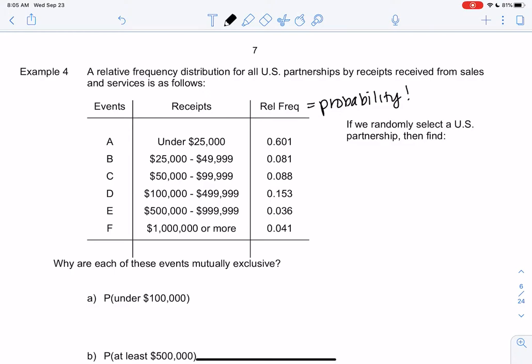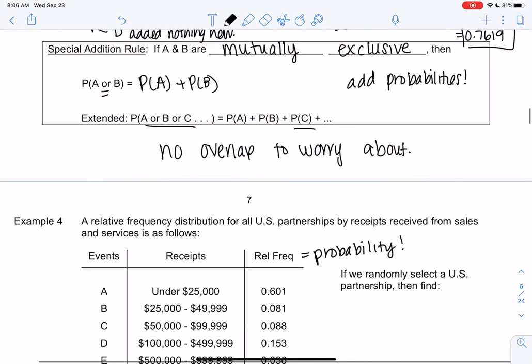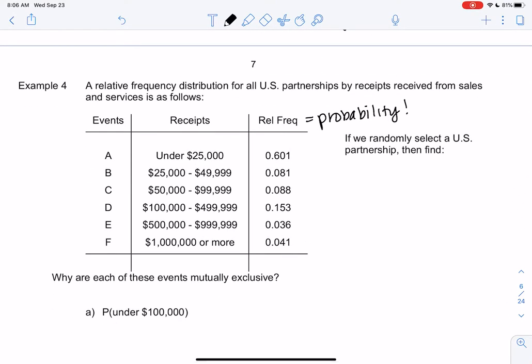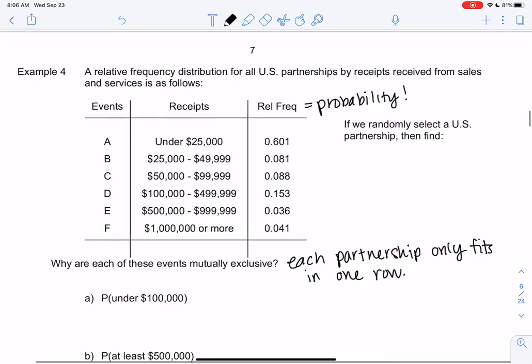We're going to use the definition we just learned in the previous video. If we have mutually exclusive events, we can just add the probabilities. That's because there's no overlap to worry about. These events are mutually exclusive because each partnership would only fit in one category. You sell in between this range or this range—you can't be in both. There's no way to have sales for $49,000 and $52,000.